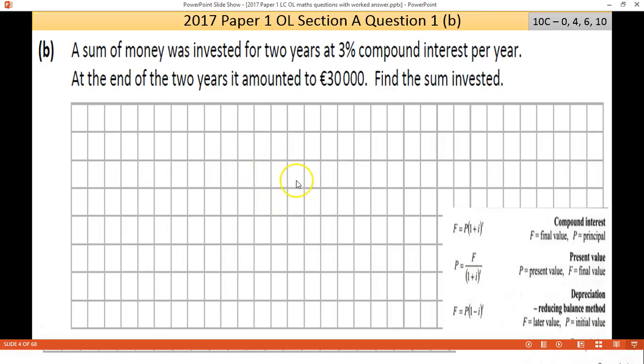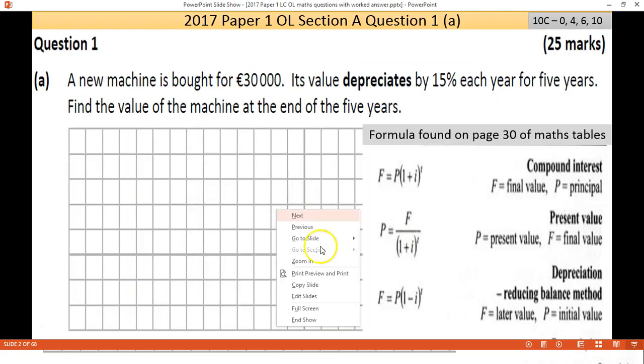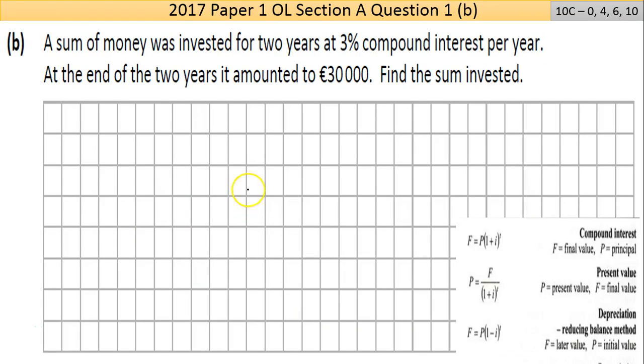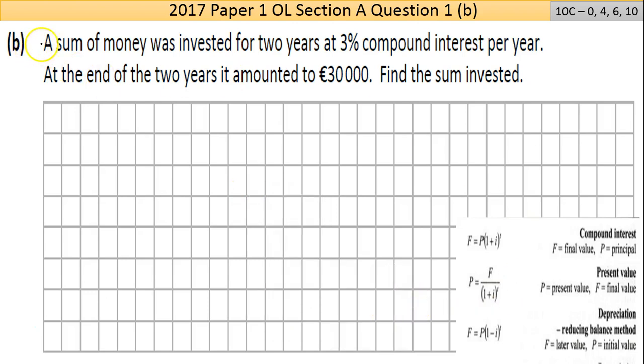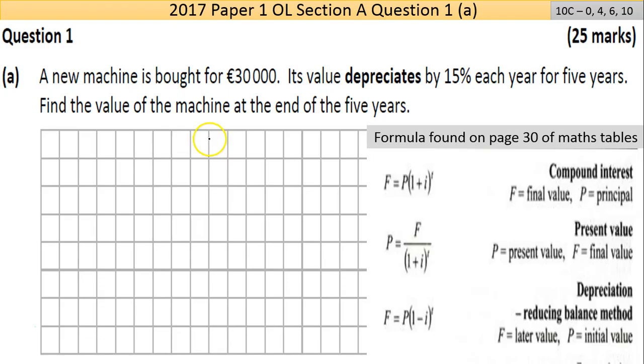Okay, we're looking at 2017 Paper 1, Question 1. I'll put it full screen. This question here is Part A, working out 10 marks for the C grade. There's four jumps in scale: four for lower partial, six for higher partial, and ten for full marks.